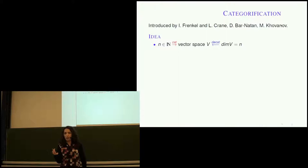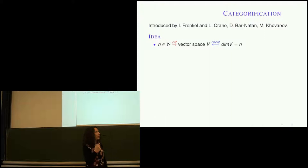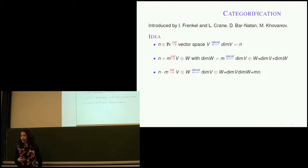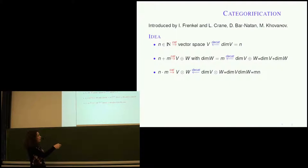I've replaced a natural number with a vector space — so what? What can we do with natural numbers? We can count, add, multiply. Can we lift those operations in this setting? Yes — there are natural operations on vector spaces. You take a direct sum, which lifts the sum of two natural numbers, and decategorification is taking the dimension. The dimension of a direct sum is the sum of dimensions. The same works with the tensor product, which lifts multiplication.